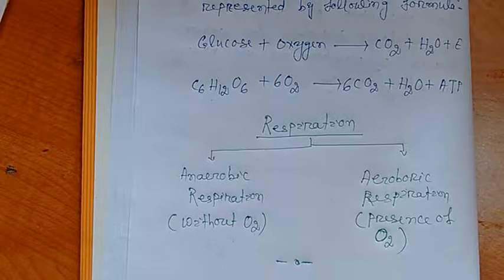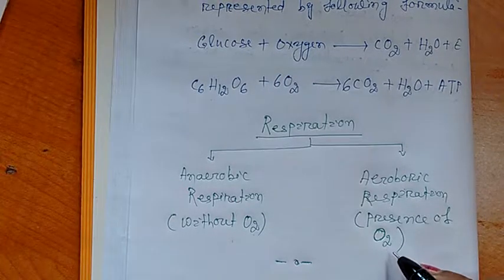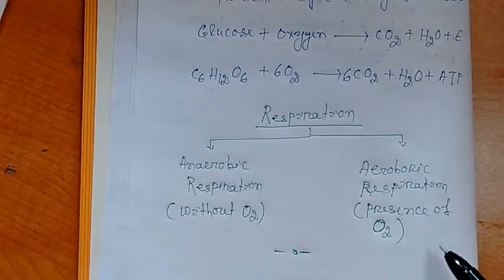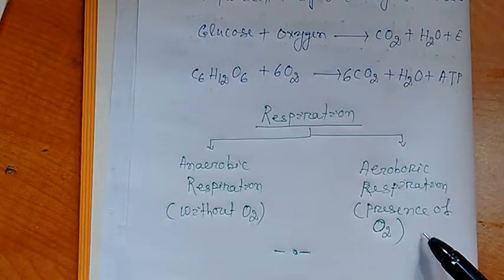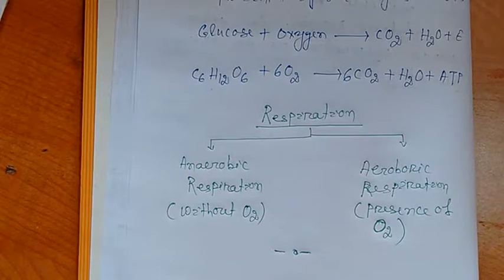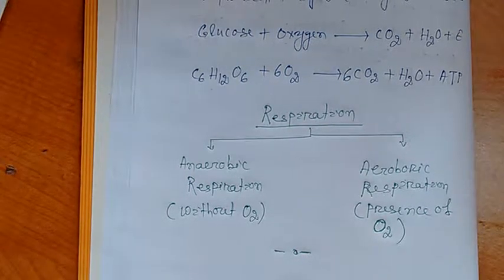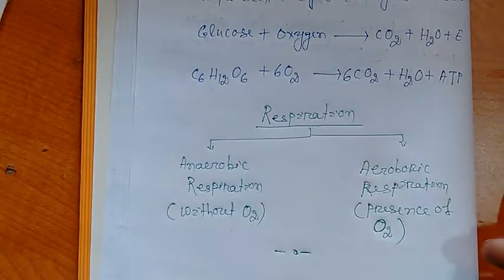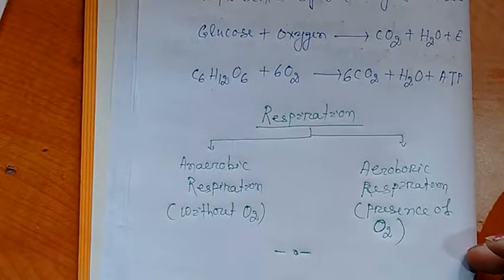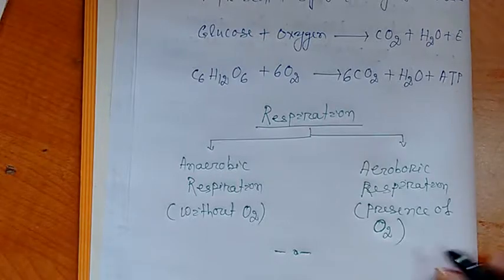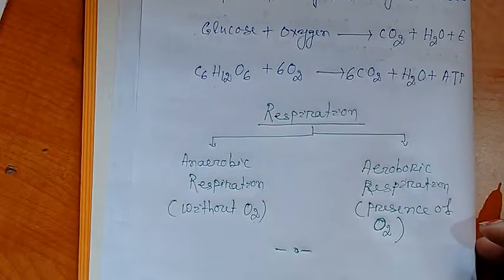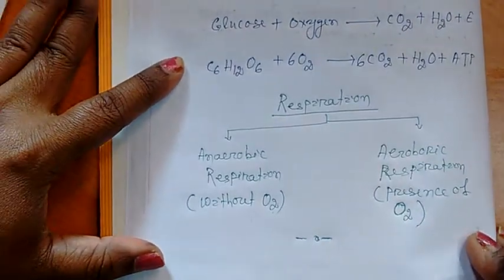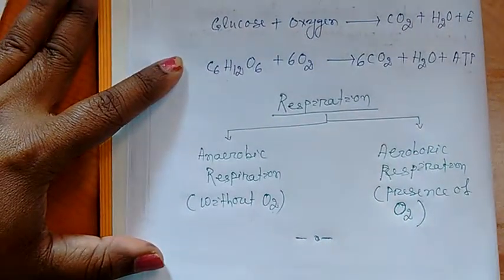It is interesting to study that prokaryotes and early animals during the time of evolution respire through anaerobic respiration because there was no availability of oxygen during the early time of the earth. Earth was covered with methane, carbon dioxide, and hydrogen. Oxygen was formed after the chemical reaction of different types of organic molecules.